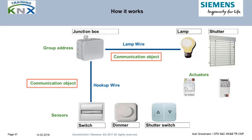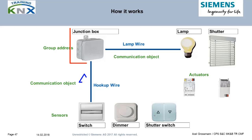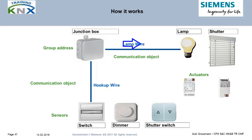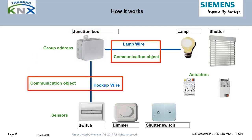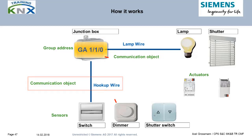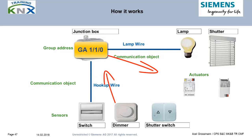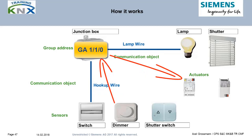The picture shows an analogy from the traditional world of electrical installations. Load and operation unit are connected via junction boxes. In these boxes, the hookup wire from the rocker switch meets the lamp wire on a screw or cage clamp terminal. In the KNX world, you might call the junction box a group address and the two connecting wires as communication objects.